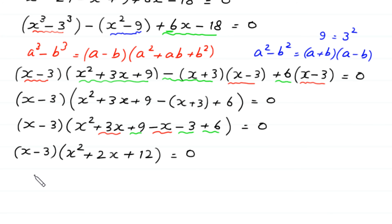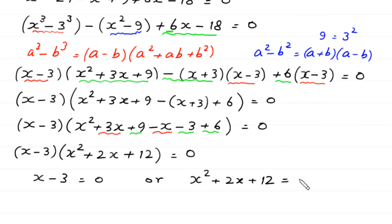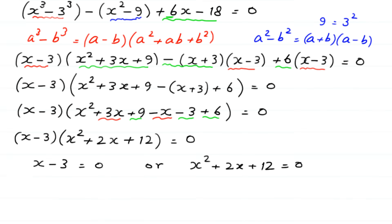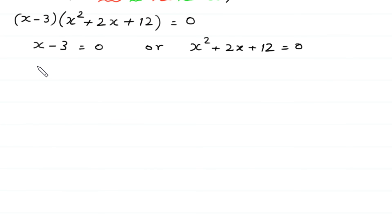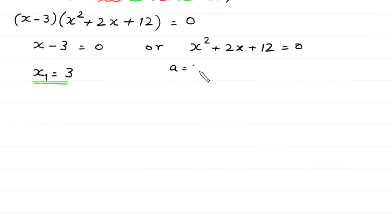Now, from here, either this expression x minus 3 is equal to 0 or this expression x squared plus 2x plus 12 is equal to 0. From the first, x is equal to 3. This is the first solution. Now, to find the other two values, we solve this quadratic equation. This is not factorable, so we solve it by the quadratic formula. In this equation, a is equal to 1, b is equal to 2, and c is equal to 12.